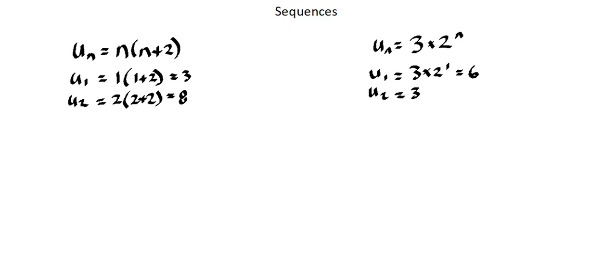And 3 times 2 to the power of 2 is 3 times 4, which equals 12. So we've identified, we've calculated the first two terms of each sequence based on the sequence rule.